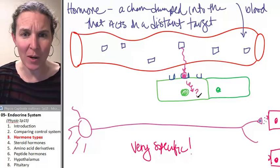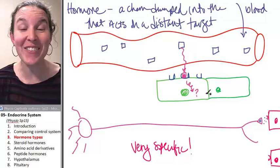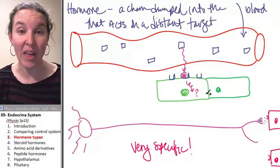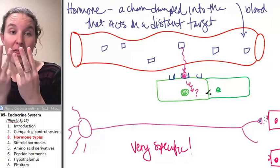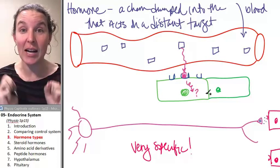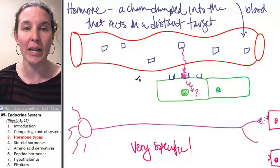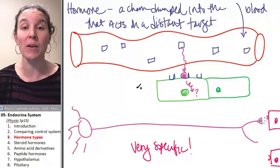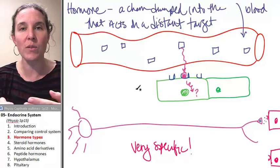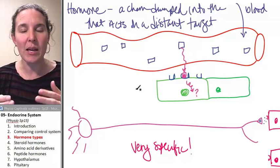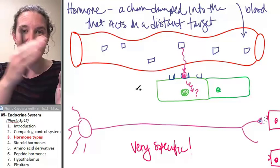We get binding. And then what happens? Well, that depends on the kind of hormone that we're dealing with. And there are actually three types of hormones that we're going to look at. And all the hormones that we're going to talk about in this class will fit into one of those categories.